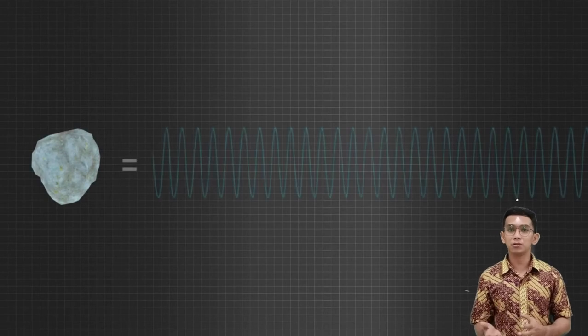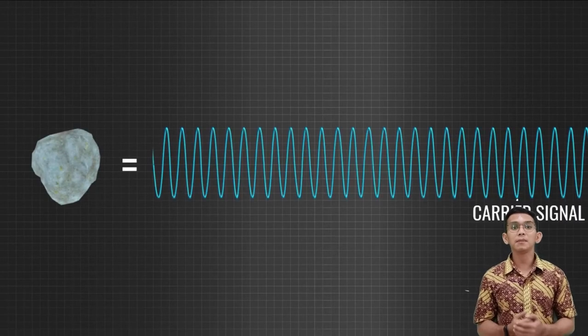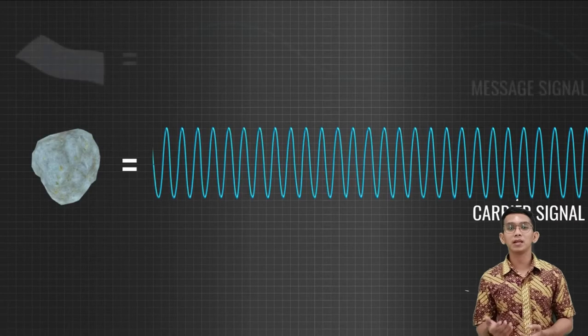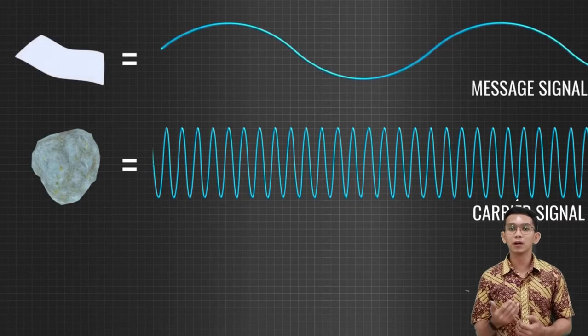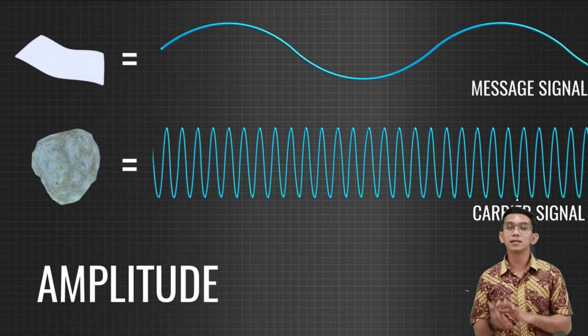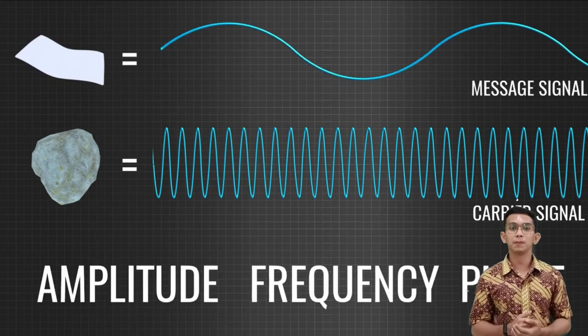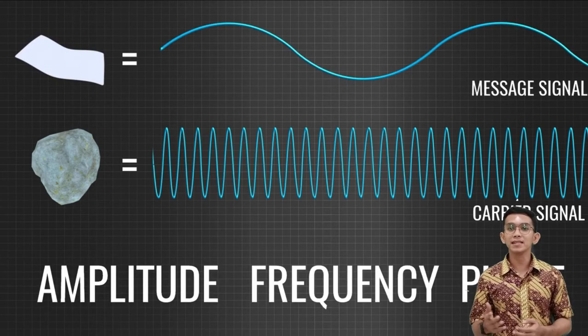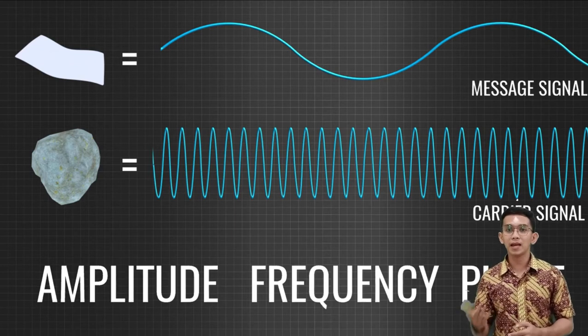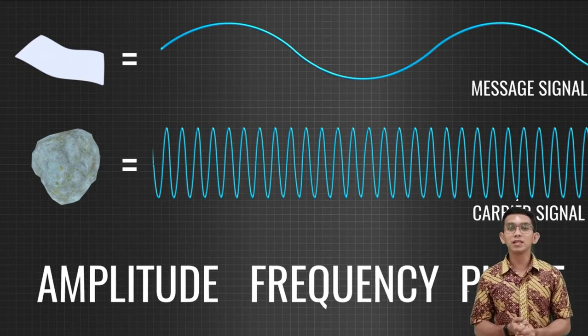This is exactly how we do modulations. In place of a stone, modulation uses a high frequency signal known as a carrier signal. As we know, any signal has three basic properties: amplitude, frequency, and phase.